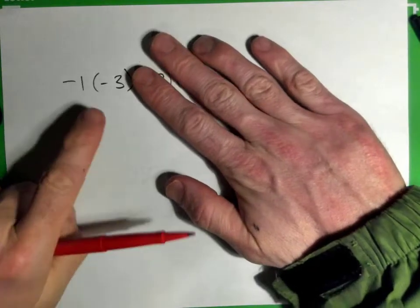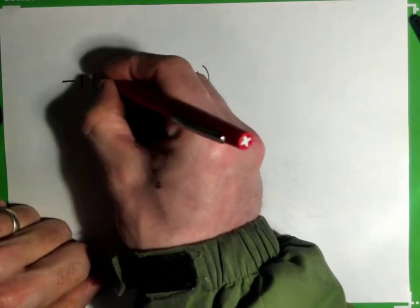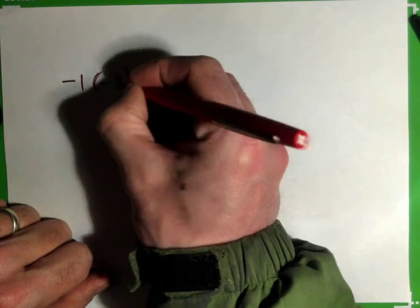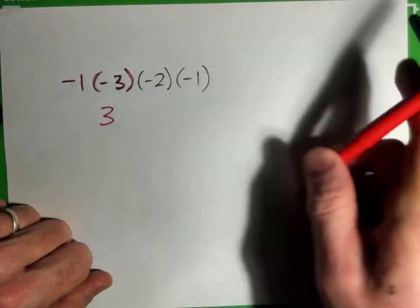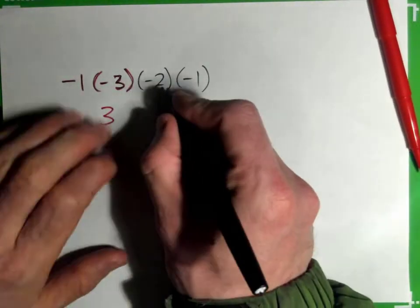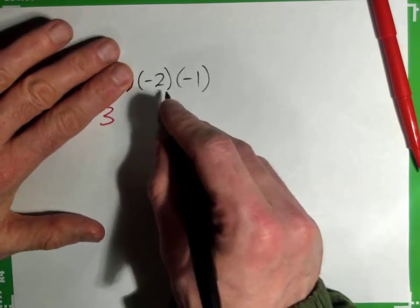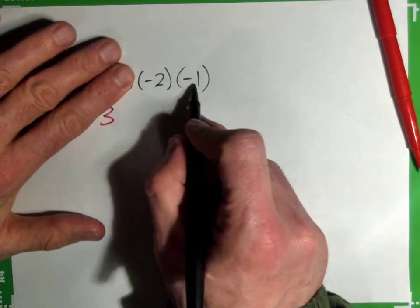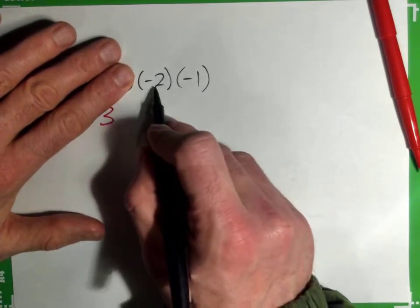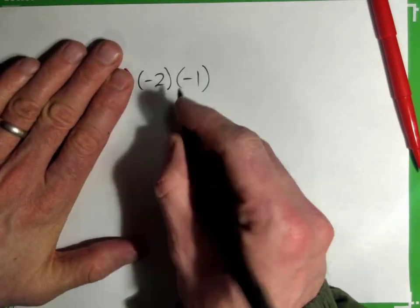Can we just do these two? So just like, if you do negative 1 times negative 3 — that's 3. Perfect. And then just do these guys: negative 2 times negative 1? Just do those two. That's just 2.